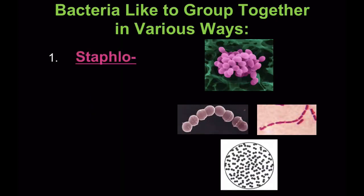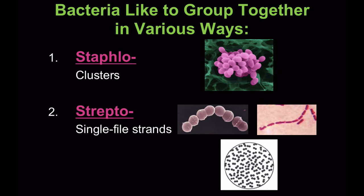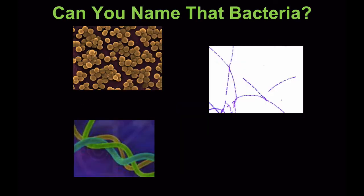The grouping can be staphylo, which means clusters; strepto, which means single-file strands; and diplo, which means pairs. So if you've ever had strep throat, you had streptococcus.